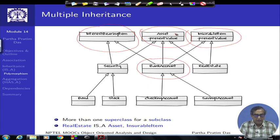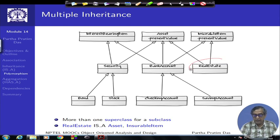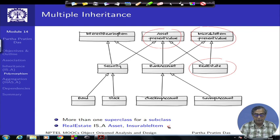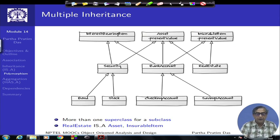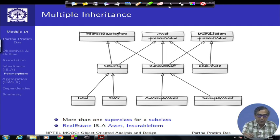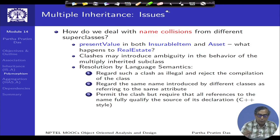In addition, bank account will have its own further properties. Similarly, real estate is both an asset and an insurable item. Whenever one subclass has more than one superclass, we say we have a situation of multiple inheritance. Multiple inheritance occurs very frequently in real life, but it has some fundamental difficulties in modeling.